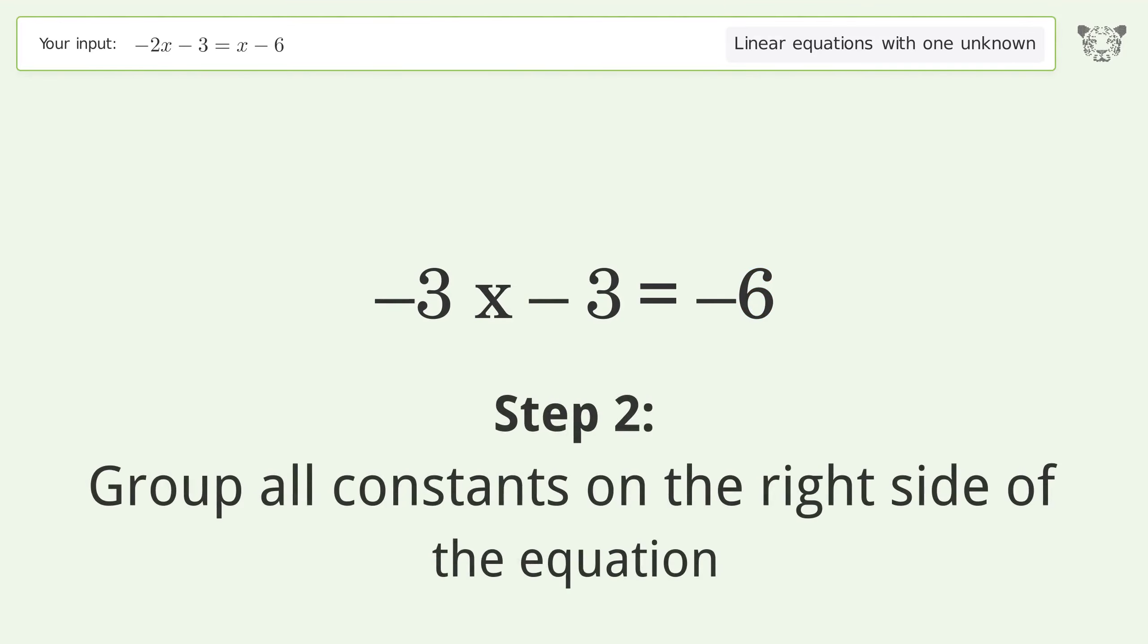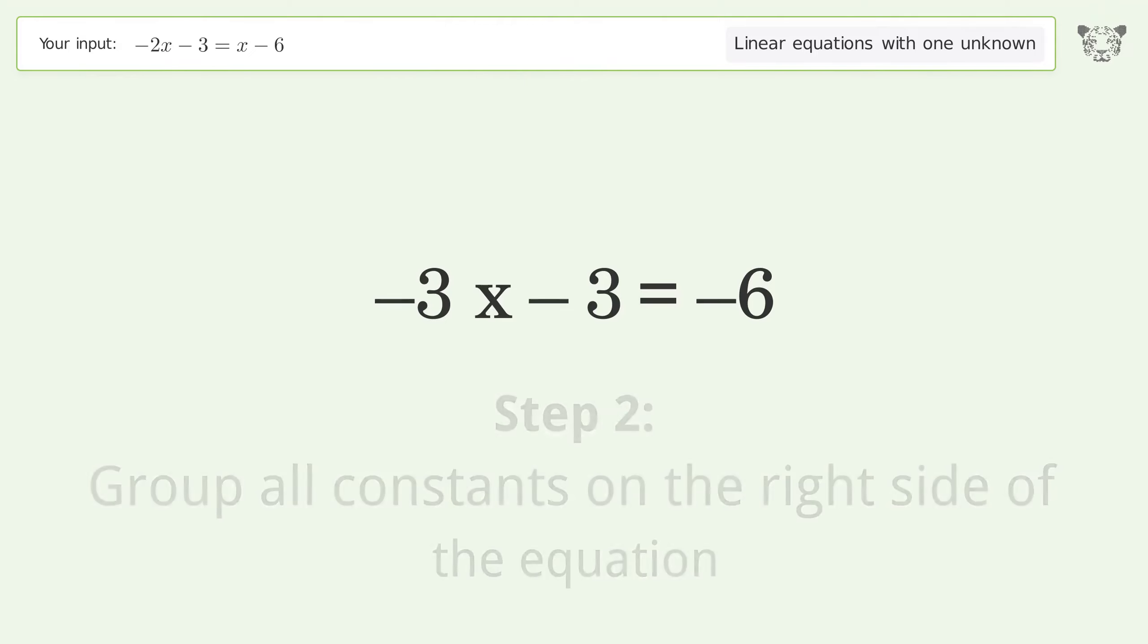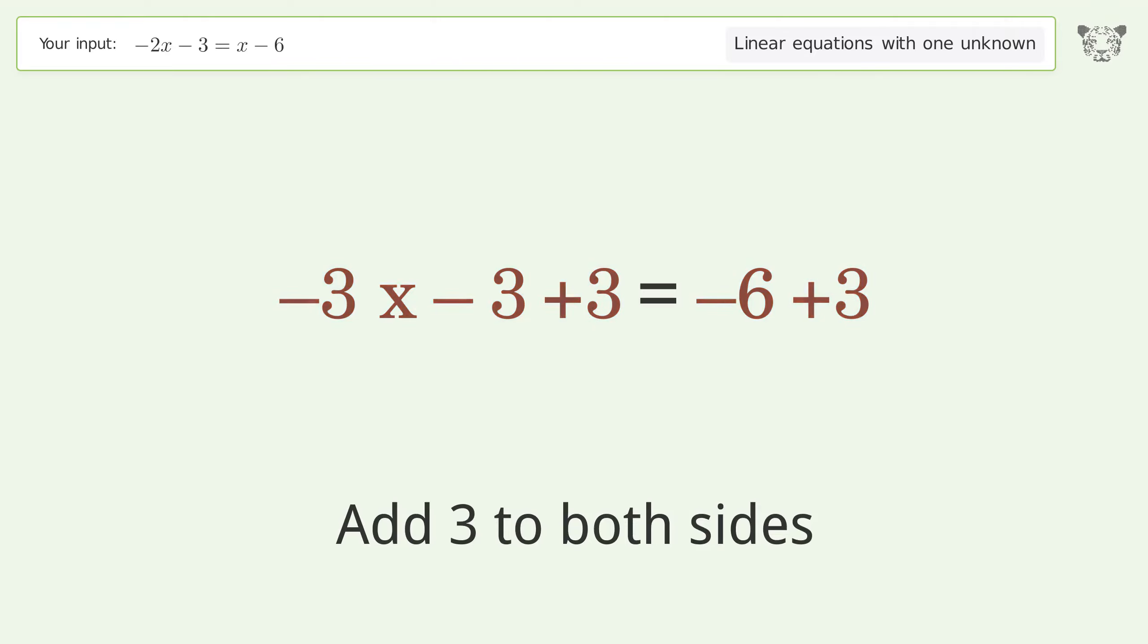Group all constants on the right side of the equation. Add 3 to both sides. Simplify the arithmetic.